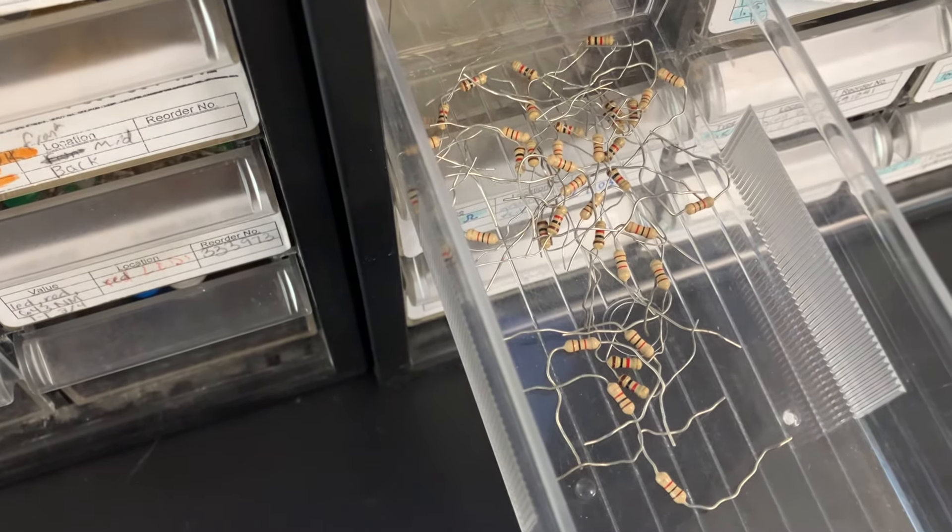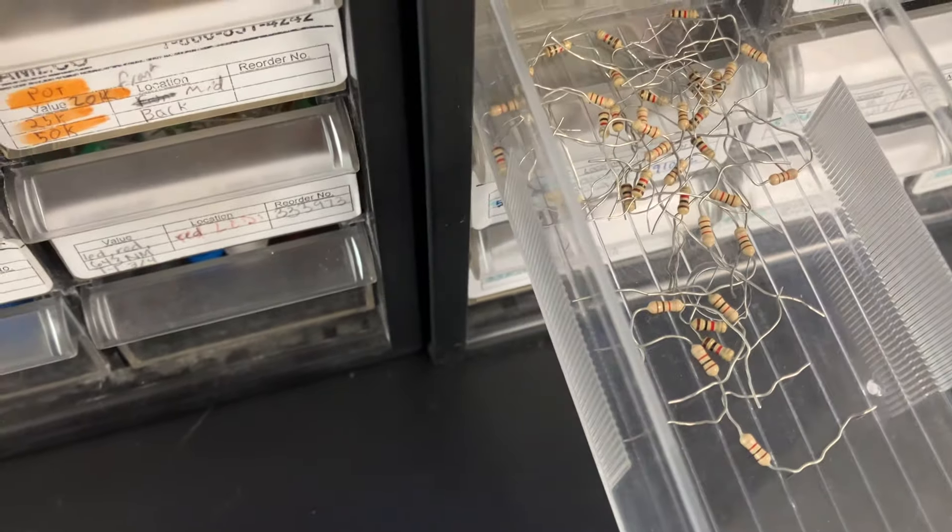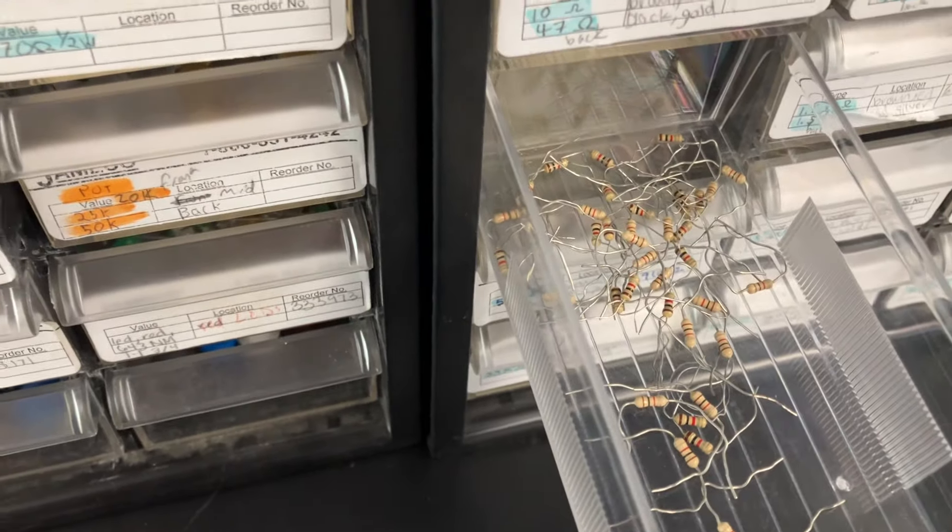you'll notice that they are all brown, black, red, which is an indicator that they're a 1000 ohm resistor. Make sure that one that you grab is coming from the right spot and gets put back in the right spot.